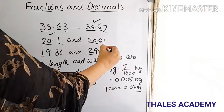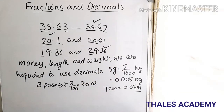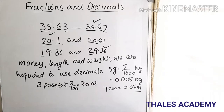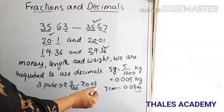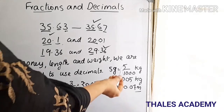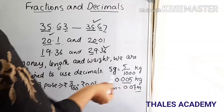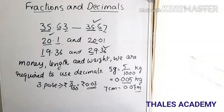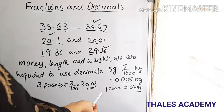While converting lower units of money, length, and weight to their higher units, we are required to use decimals. For example, rupees 3 by 100 can be written as rupees 0.03. Five grams can be written as 5/1000 kg, which is 0.005 kg. Seven centimeters can be written as 0.07 meters.